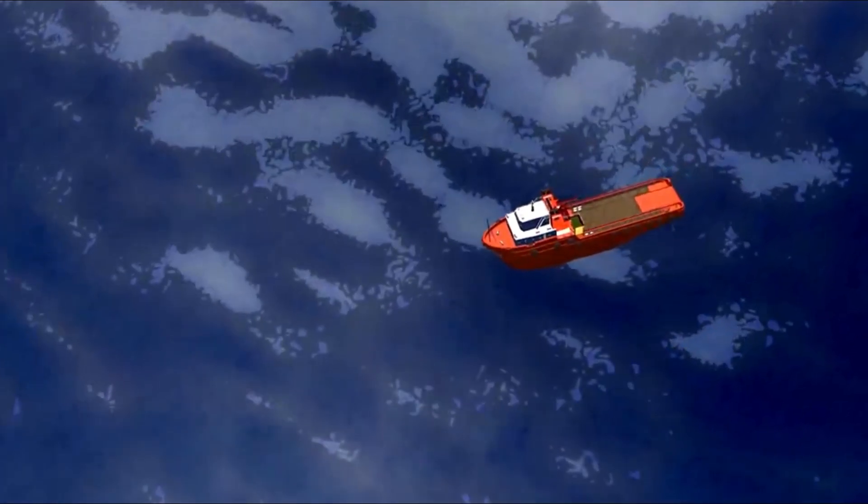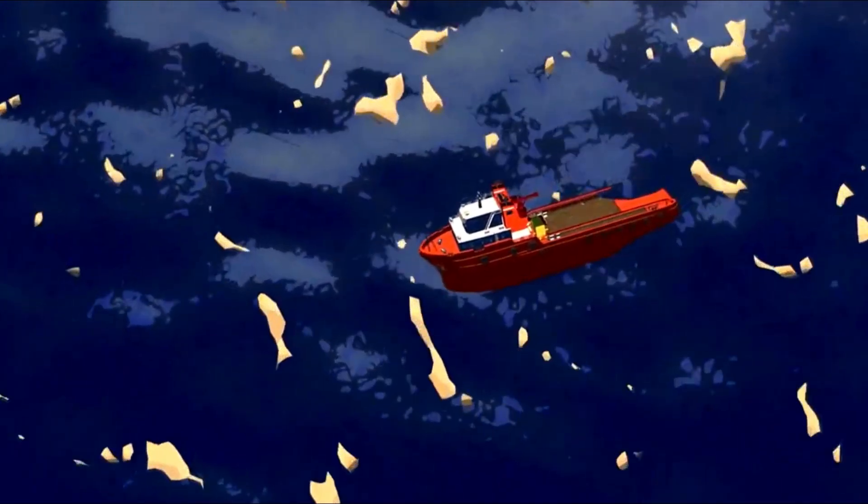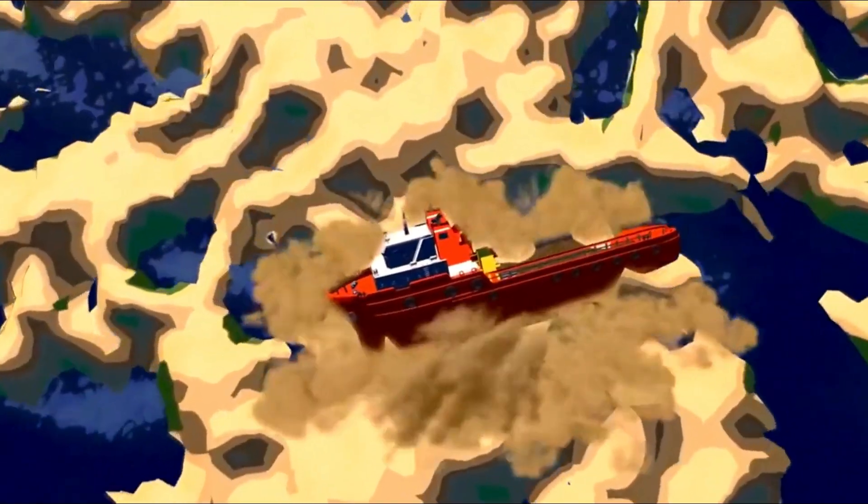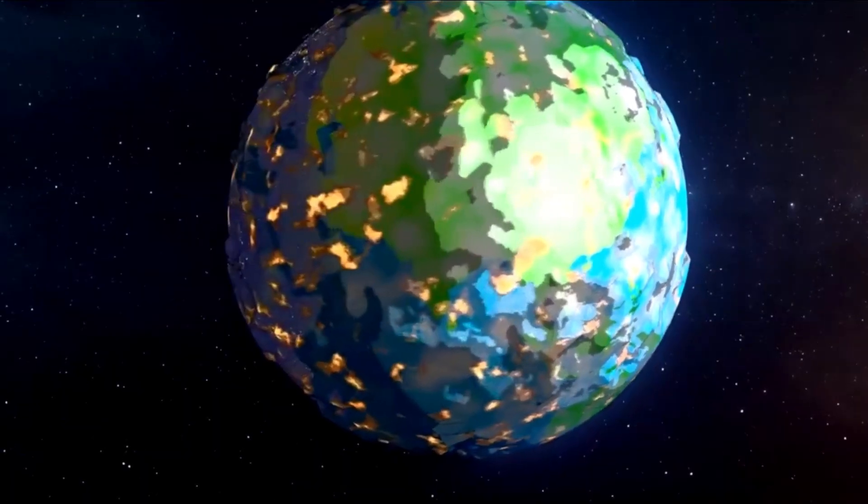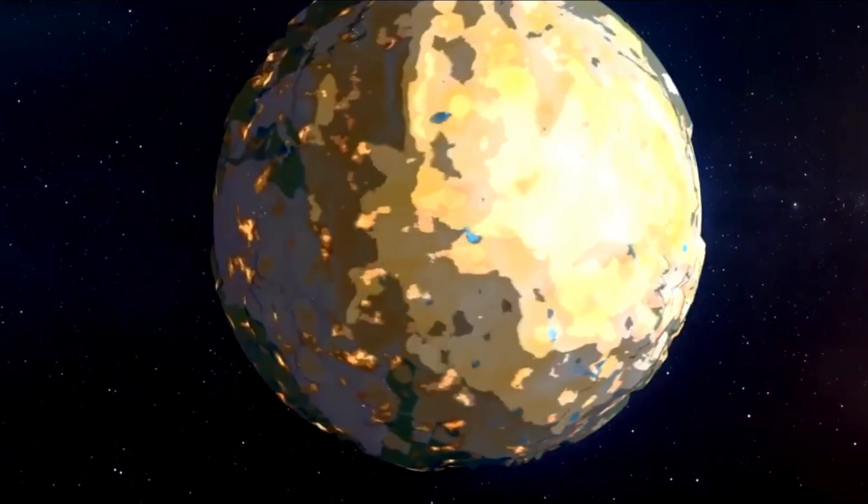At 2 billion years mark, the sun's luminosity will make oceans evaporate on Earth. Life on our planet will cease to exist in all but the simplest forms, which will soon go extinct as well.